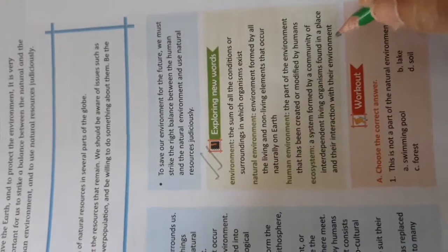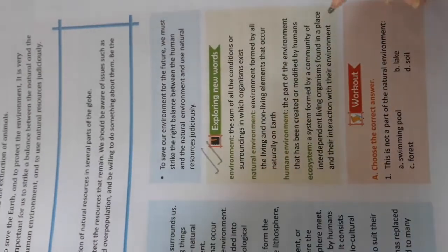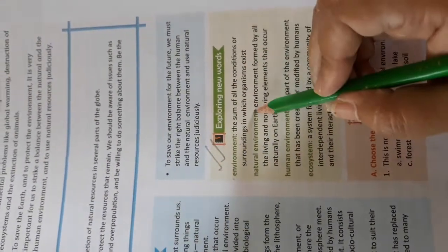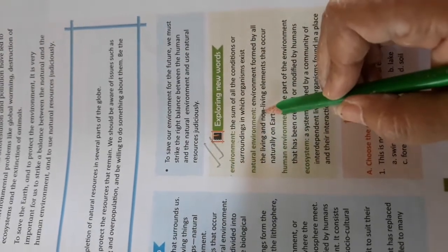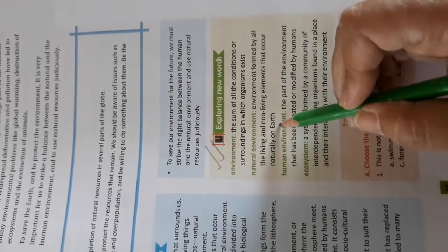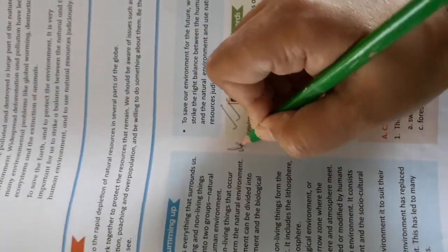Next comes the exercise part. Before we start our next class, you all have to learn these new words. First is environment — the sum of the conditions or surroundings in which an organism exists. Next is natural environment — environment formed by all living and non-living things that occur naturally on earth. Next you have human environment and ecosystem. Learn all of these by heart from your book.